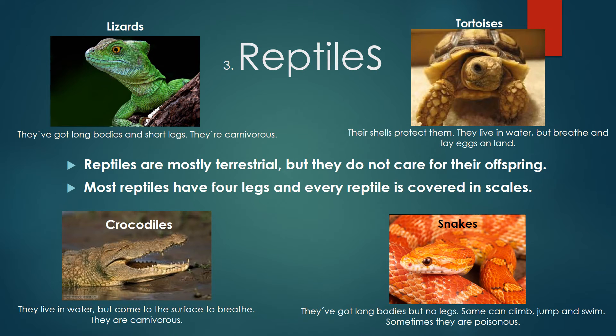Crocodiles live in water but come to the surface to breathe; they are carnivores. Snakes have long bodies but no legs. Some can climb, jump, and swim. Sometimes they are poisonous.